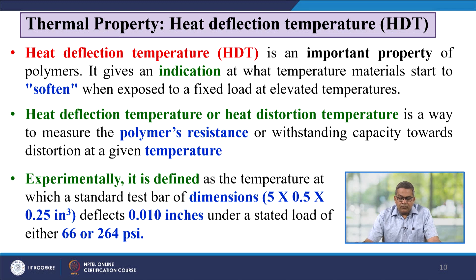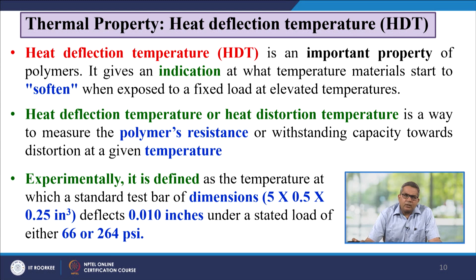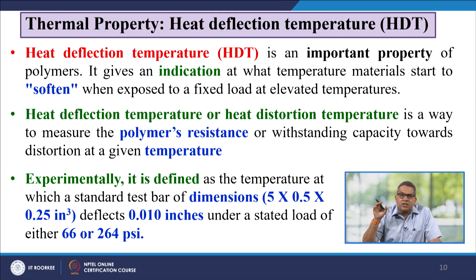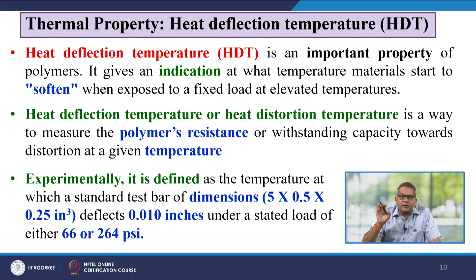Now let us talk about the heat deflection temperature, HDT. This is an important property of the polymer — it gives an indication of at what temperature a material starts to soften when exposed to a fixed load at elevated temperature. HDT, sometimes referred to as heat distortion temperature, is a way to measure a polymer's resistance or withstanding capacity towards distortion at a given temperature. Experimentally, it is defined as the temperature at which a standard test bar of dimensions 5 × 0.5 × 0.25 cubic inch deflects 0.010 inch under a stated load of either 66 or 264 psi.